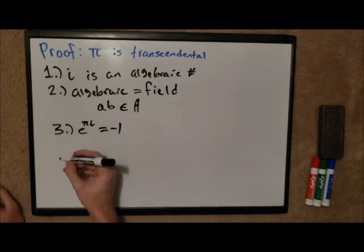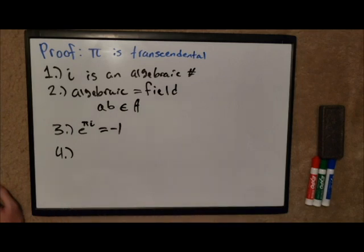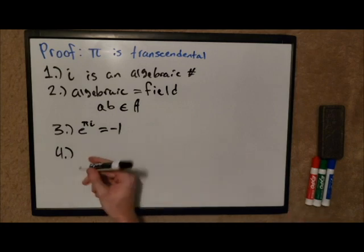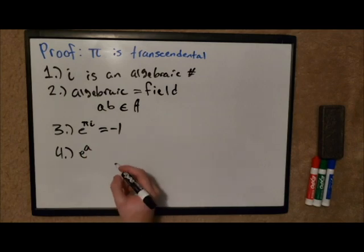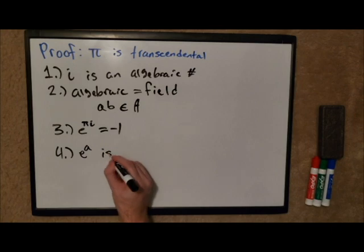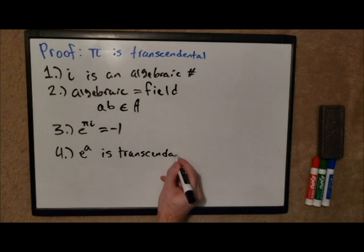For our last idea here, our last fact that we need to know before this proof is the Lindemann-Weierstrass theorem. I briefly mentioned this before in the last video, I didn't give it a name but I definitely mentioned it, which is that if you take e to the a where a is an algebraic number, then that is a transcendental number. So e to the power of any algebraic number will give you a transcendental number.